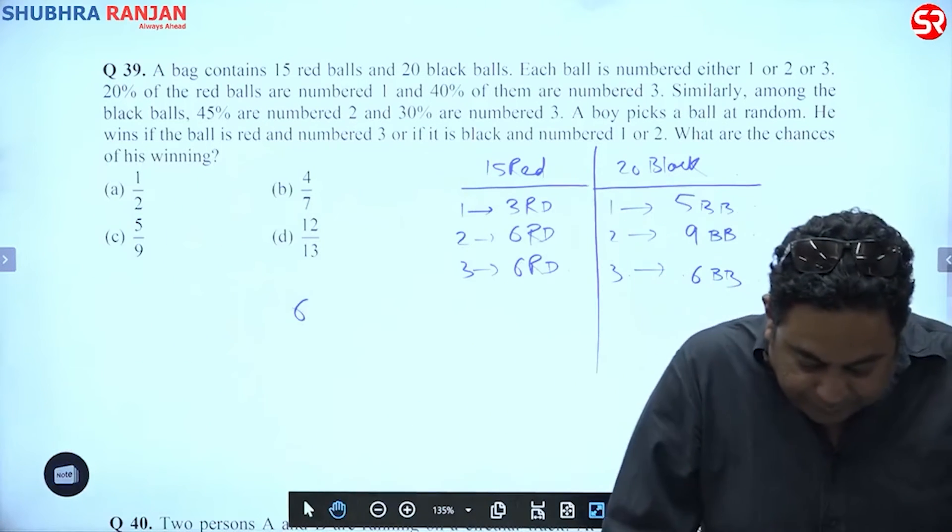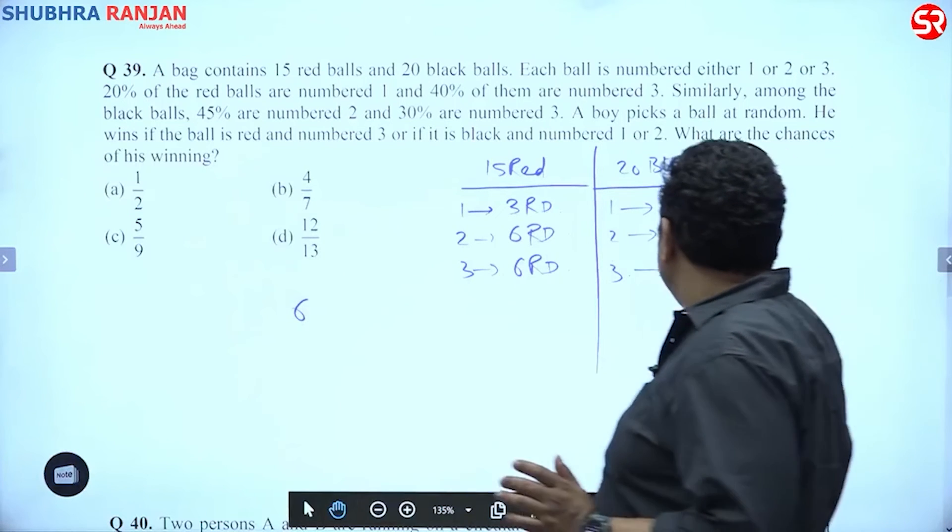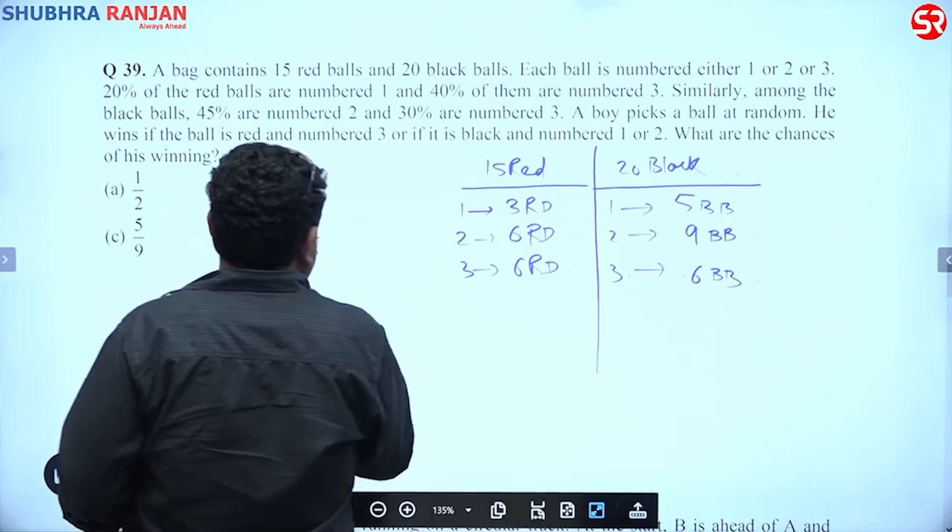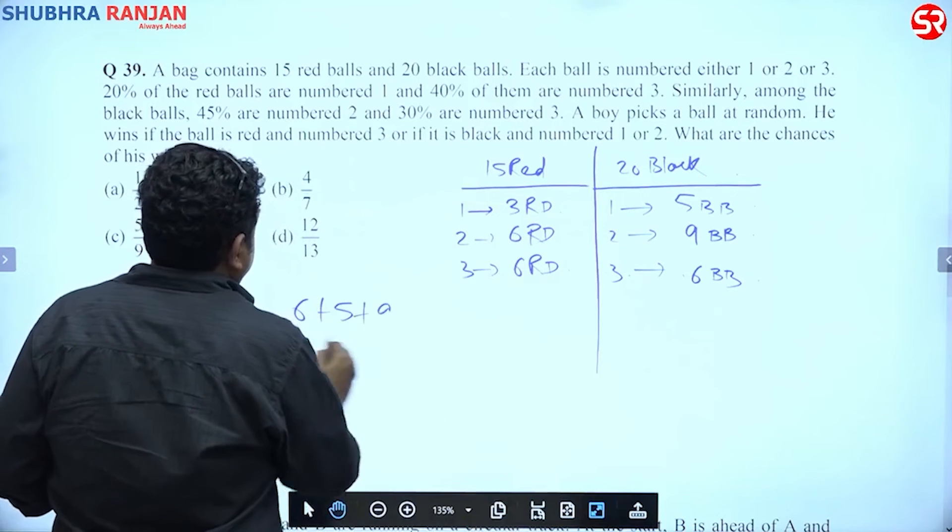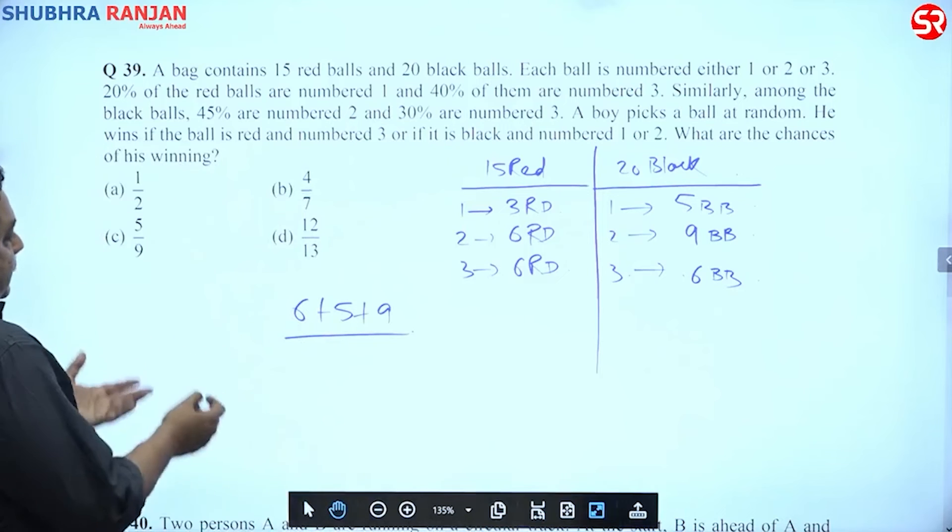says if it is black and number 1 or 2. Black and number 1 or 2, how many are these? These are 5 plus 9. So he says what are the chances of his winning? So this is the chances of winning